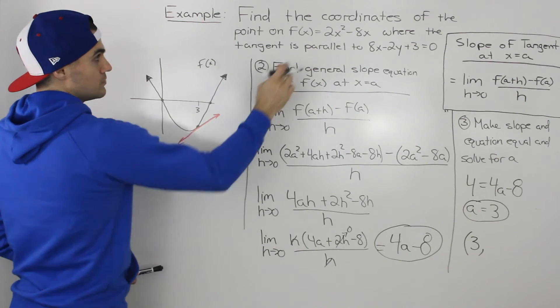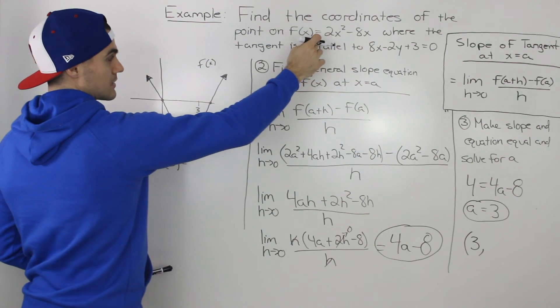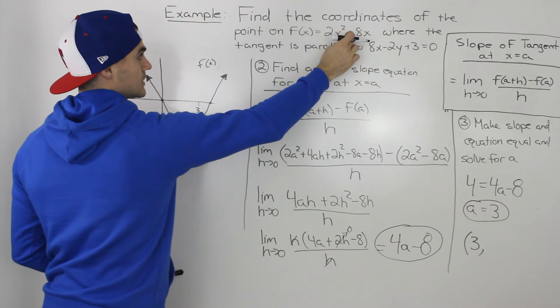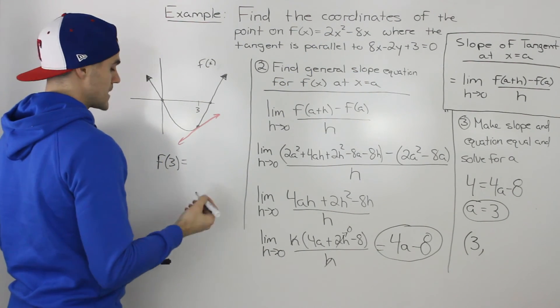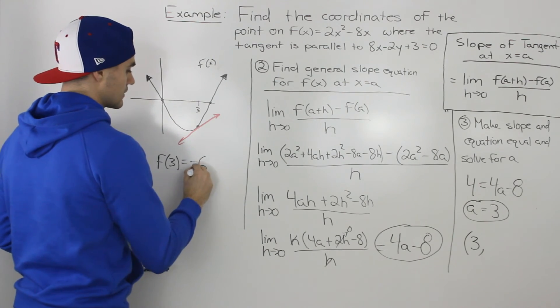So f(3) would be 3², which is 9 times 2, 18, and then 18 minus 8 times 3, which is 24. So 18 - 24 would give us -6.